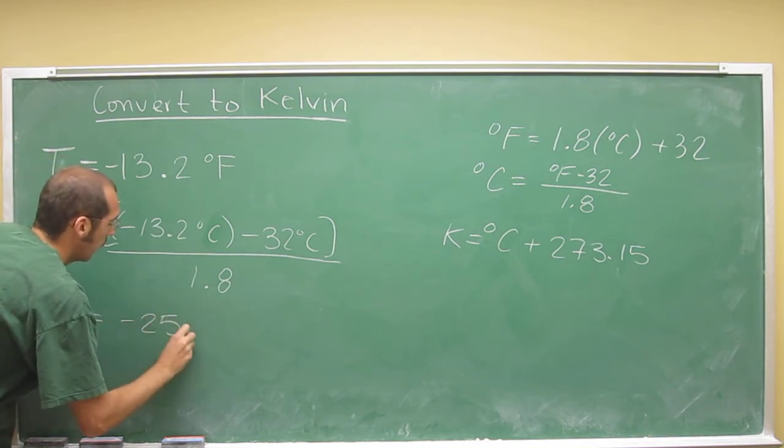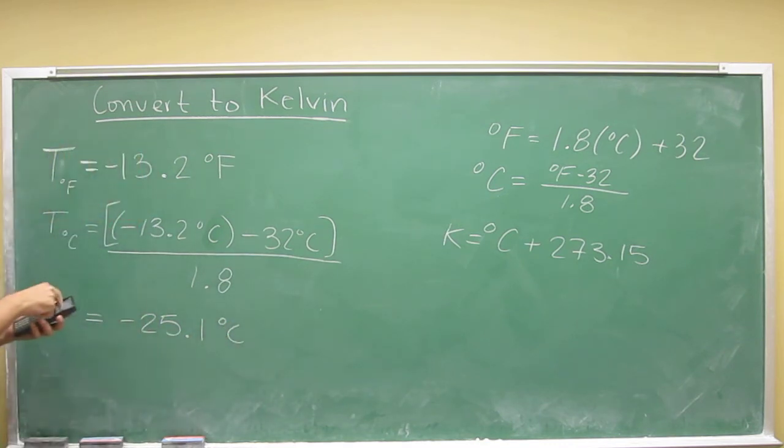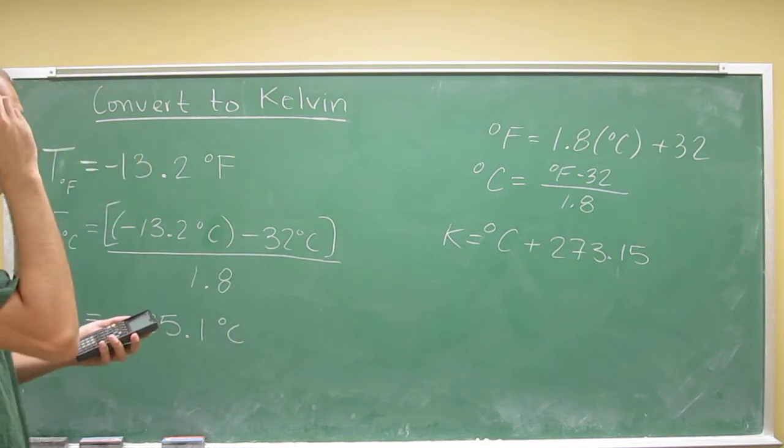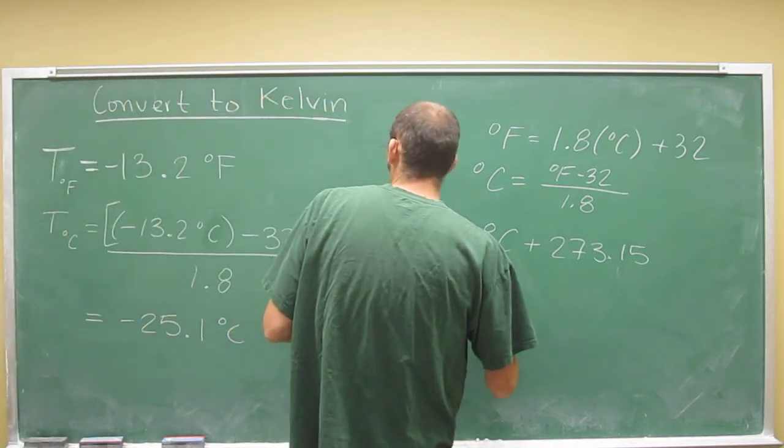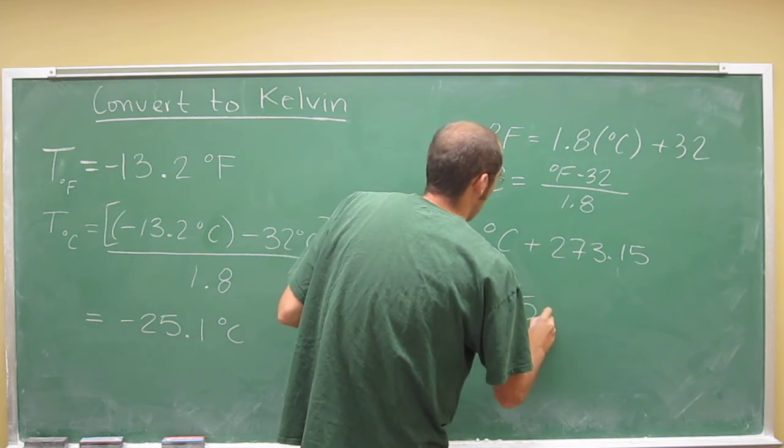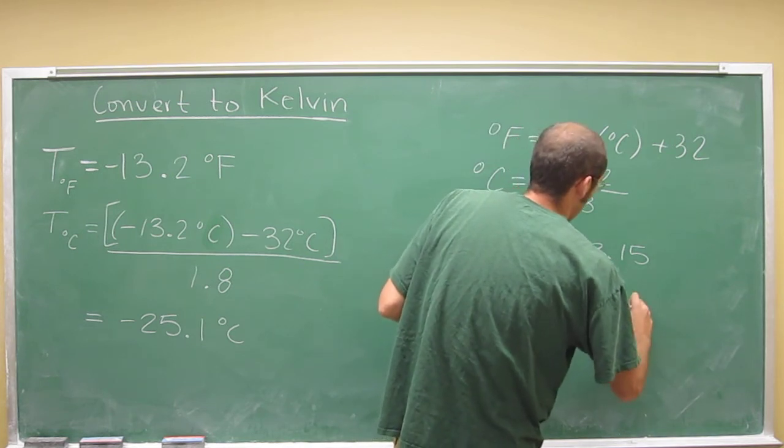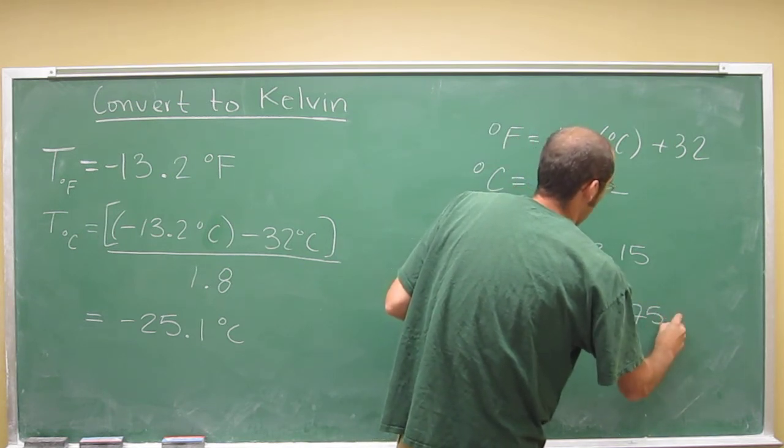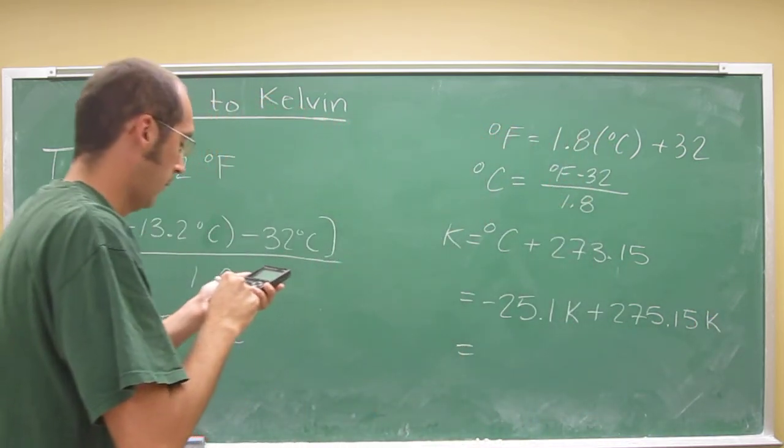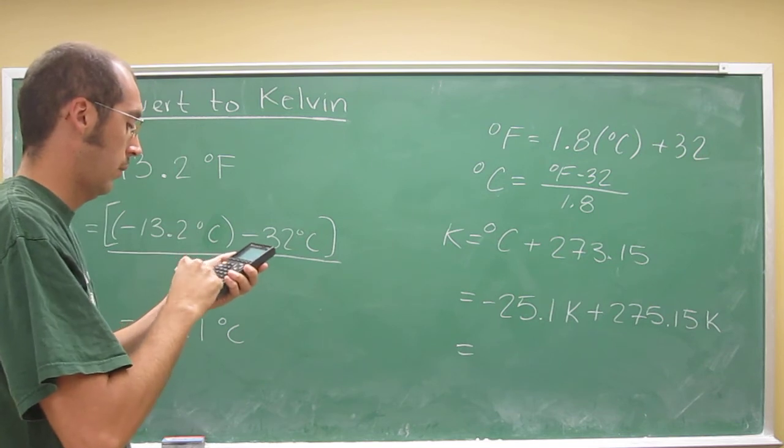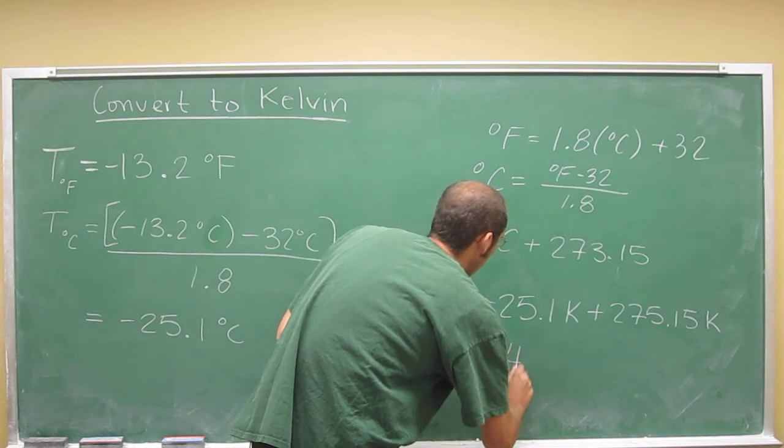negative 25.11 degrees Celsius. I'm just going to leave that number in my calculator and then add that to 273.15. So plus 273.15, and that's going to give me 248.0.